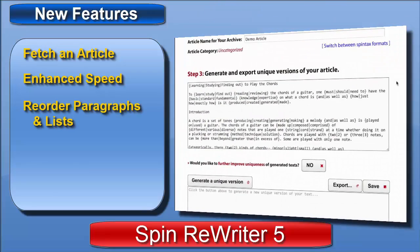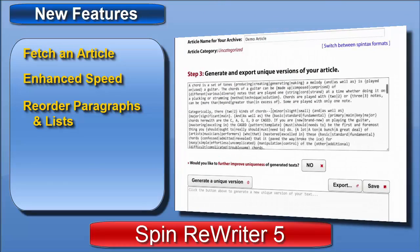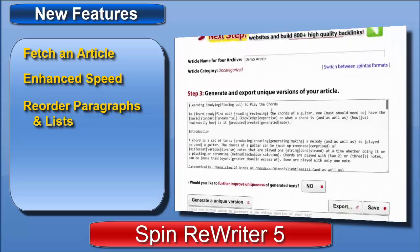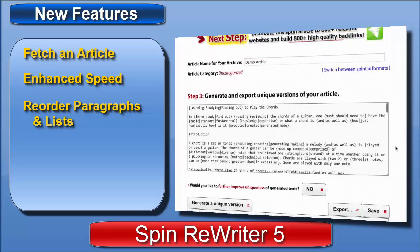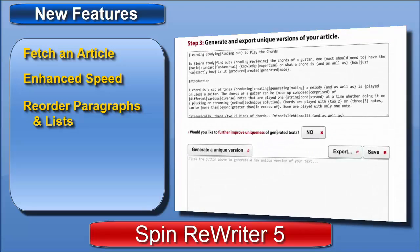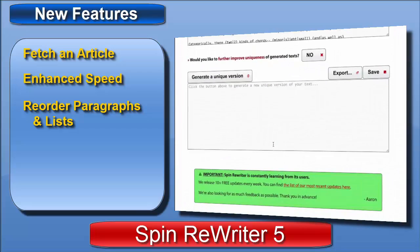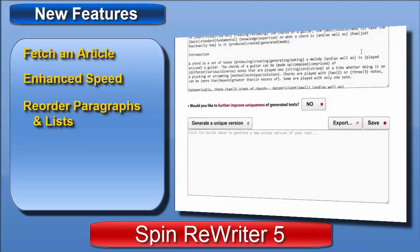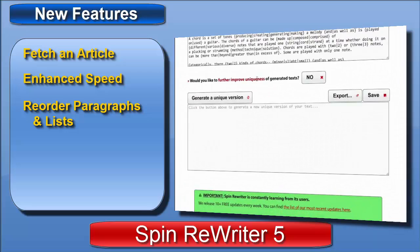Here we are, and once again you're probably quite familiar with the interface. Here in this text box at the top, we've got our spun article that will be used to create all of our new articles. By clicking the 'Generate a Unique Version' button, these new articles get created and displayed in the text box at the bottom. But you might have noticed that we've now got this new button here in the middle, similar to the button in step one that enables all of the ENL semantic spinning features.